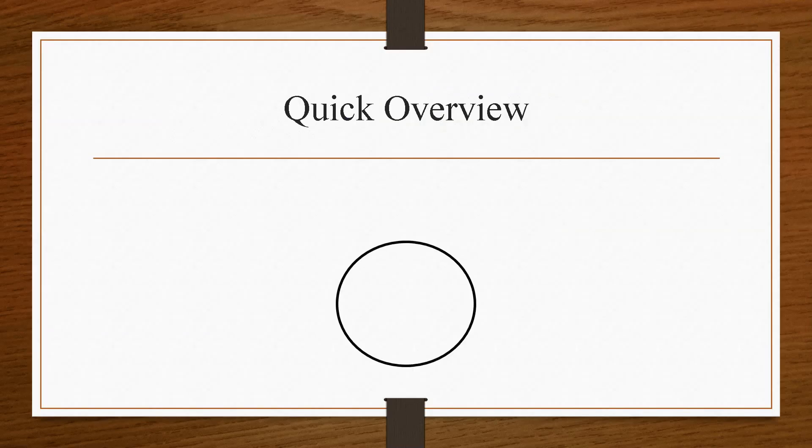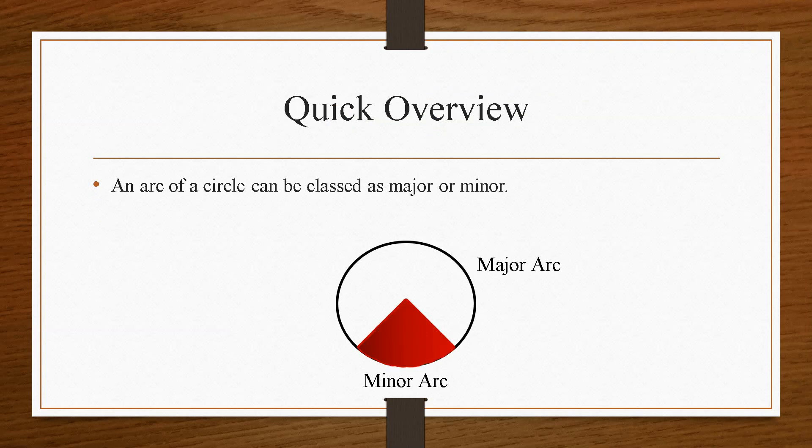So just a quick overview, an arc of a circle can be classed as major or minor. Now a minor arc is the smaller portion of the circle compared to the major arc which would be this section here. Now the arc itself deals only with the circumference.